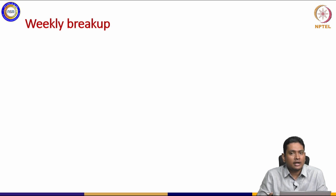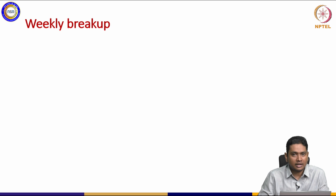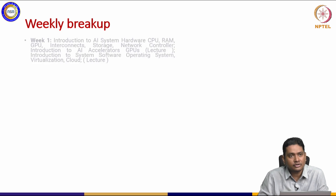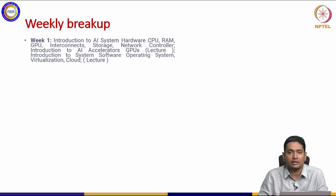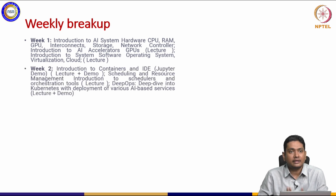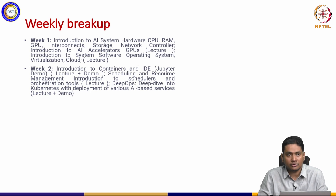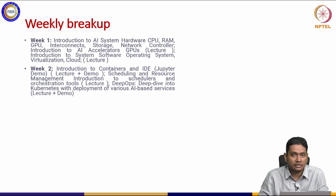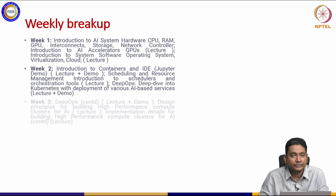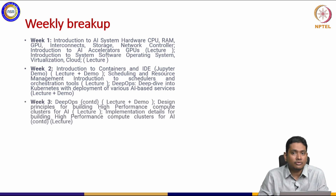Now if we see the weekly breakup, this will be much more clear how we will go about it. First we will talk about the systems that are required, both the hardware and the software. In the next week, we will go towards the tools that are necessary — schedulers, different containers, Kubernetes, and deployment of various AI-based services with them.